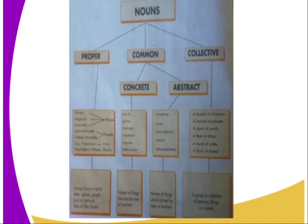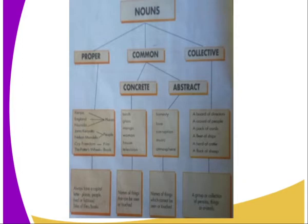If we talk of common nouns, these are the general names that refer to people and places. With proper nouns, they begin with a capital letter, whereas common nouns are just the general names. Abstract nouns are nouns that cannot be touched but we can feel them. Collective nouns are nouns that are grouped together.